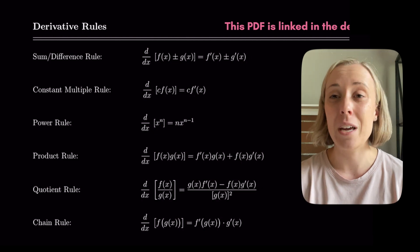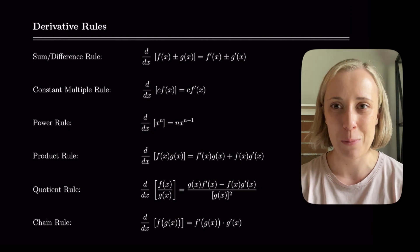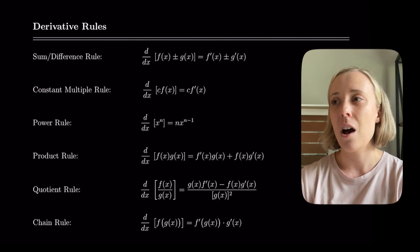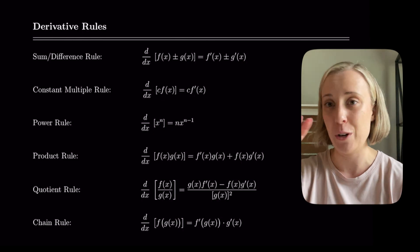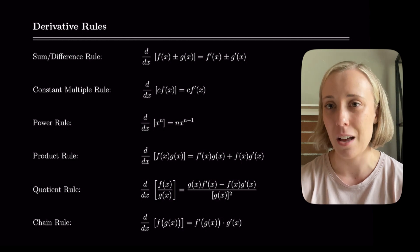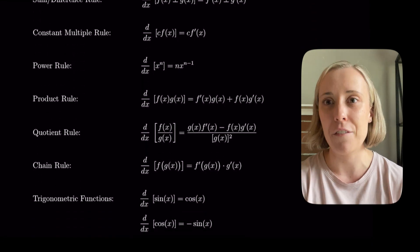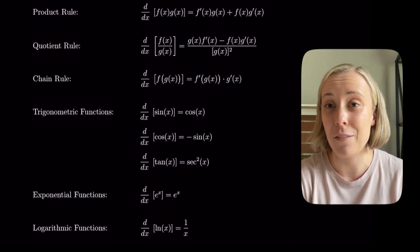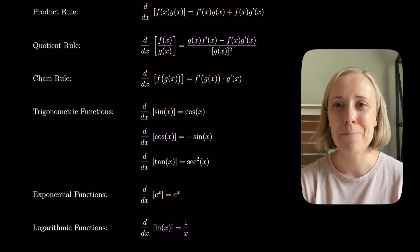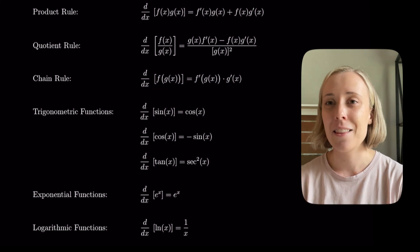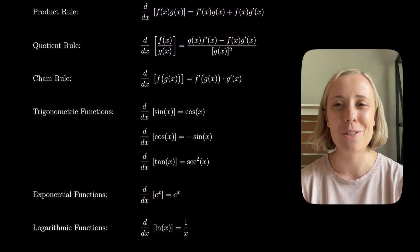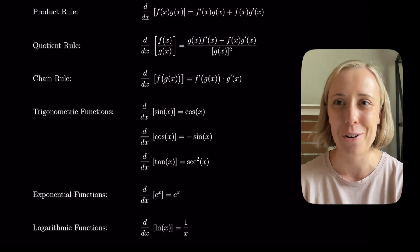We also have the product rule for multiplying functions, the quotient rule for dividing — when we have a rational function with something in the numerator and denominator — and chain rule for compositions of functions. Additionally, we have derivatives of trigonometric functions (focusing on sine, cosine, and tangent), the derivative of e^x which is e^x, and the derivative of ln(x) which is 1/x.